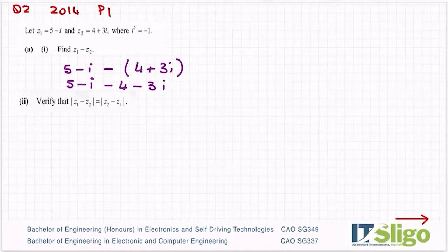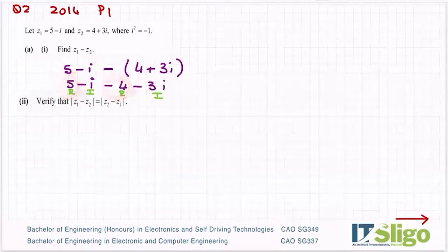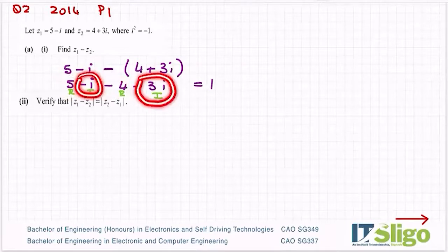So in other words, you have 5 minus i minus 4 minus 3i. And then real, imaginary, real, imaginary - group the reals together. So 5 minus 4 is 1, and then you have minus 1i minus 3i will give you minus 4i.